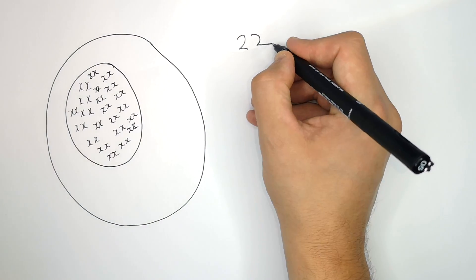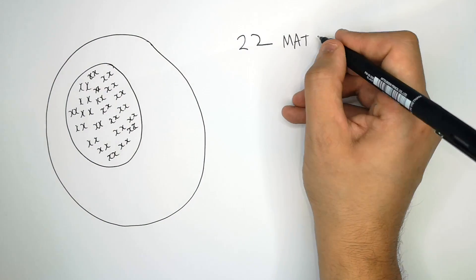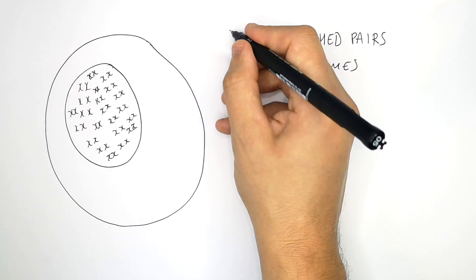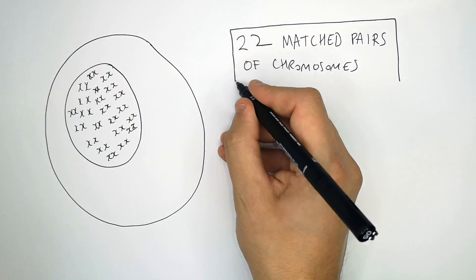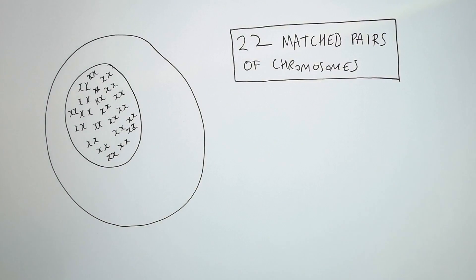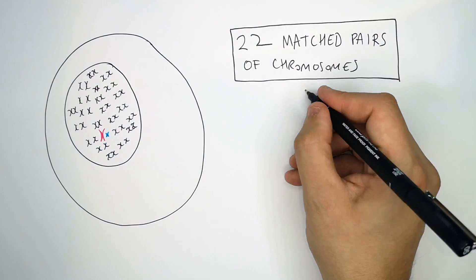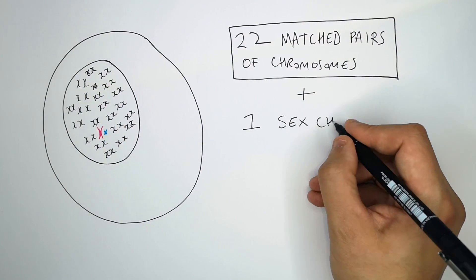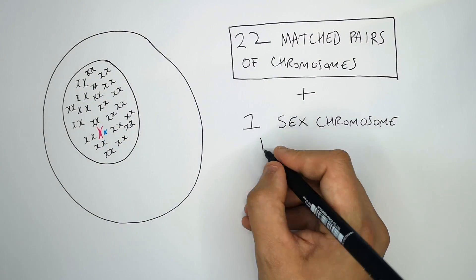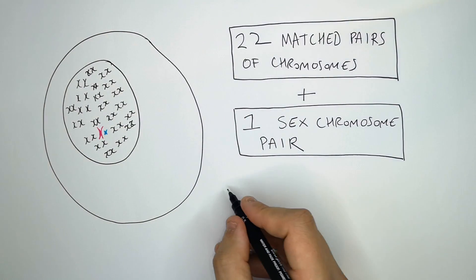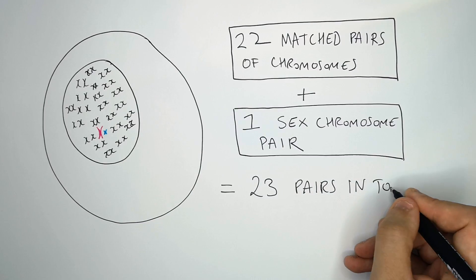In humans, we have 22 matched pairs of chromosomes. What determines if we're a male or a female are the sex chromosomes. We've got one pair of sex chromosomes, which gives us a total of 23 pairs.